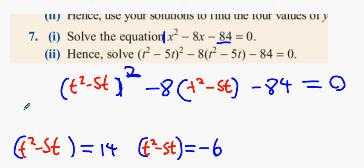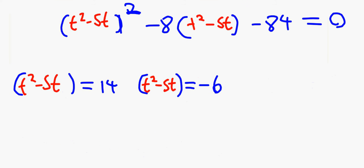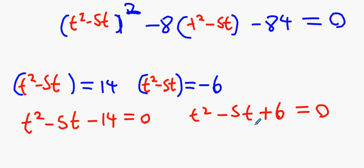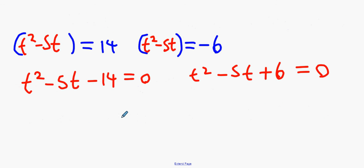Okay. So what happens next, guys, is you have a new formula. You have t squared minus 5t minus 14 equal to 0. The other one you have is t squared minus 5t plus 6 equal to 0. You have two different quadratic equations. Two answers for each equation, which should result in four different answers.